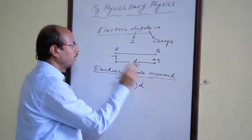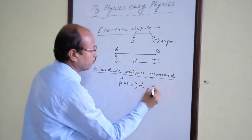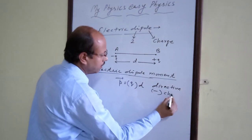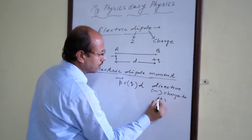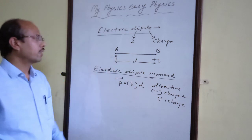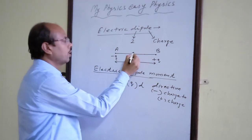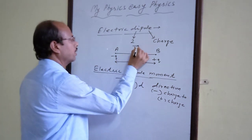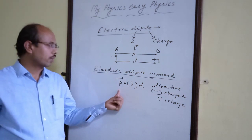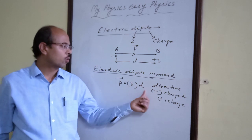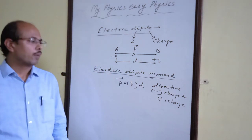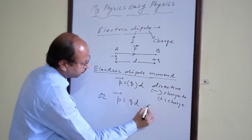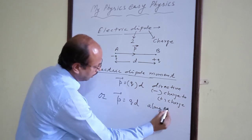Therefore, electric dipole moment P equals q into d. It is a vector quantity, and the direction of electric dipole moment is always from the minus charge towards the plus charge. So in the diagram, this is minus q and this is plus q, and the arrow shows the direction of electric dipole moment. The formula is charge into distance, direction from minus charge to plus charge. We can also write P equals qd along AB.